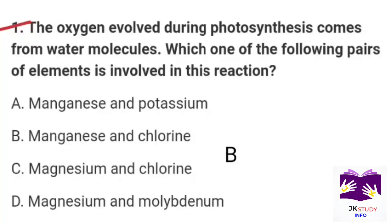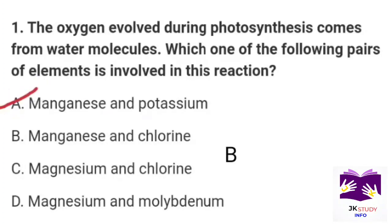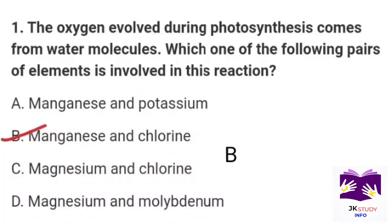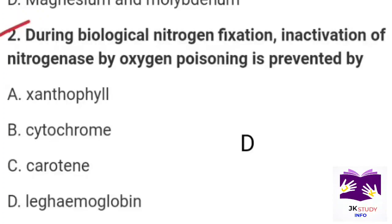First question: The oxygen evolved during photosynthesis comes from water molecules. Which one of the following pair of elements is involved in this reaction? Option A: manganese and potassium. Option B: manganese and chlorine. Option C: magnesium and chlorine. Option D: magnesium and molybdenum. Correct option is Part B: manganese and chlorine.